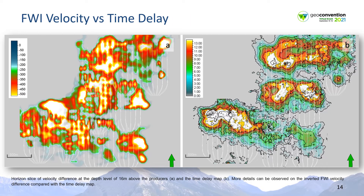Here we are comparing a horizon slice from the FWI velocity volume against the time delay observed on a horizon below the steam chambers. On the left is the horizon slice of velocity difference at an approximate elevation 16 meters above the producer wells, and the time delay map is on the right hand side. Note that steam variations along the horizontal wells can be observed on the inverted FWI velocity difference and not on the time delay map. This illustrates the improvements in resolution.